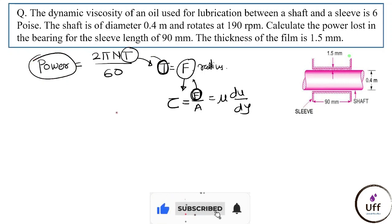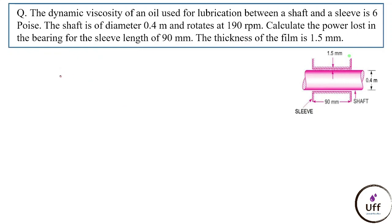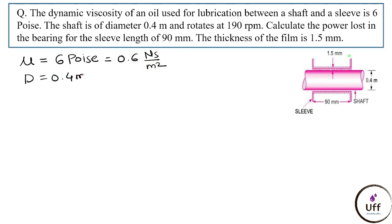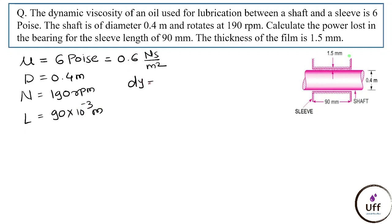Given values: viscosity = 6 poise = 0.6 N·s/m², shaft diameter = 0.4 m, speed = 190 rpm, sleeve length = 90 mm = 90 × 10⁻³ m, and film thickness dy = 1.5 mm = 1.5 × 10⁻³ m. Always use SI units.